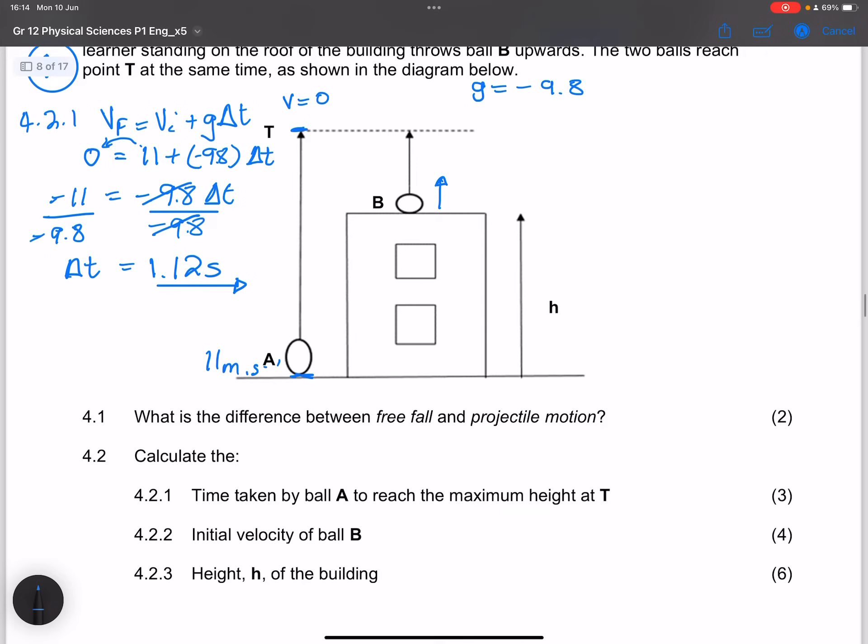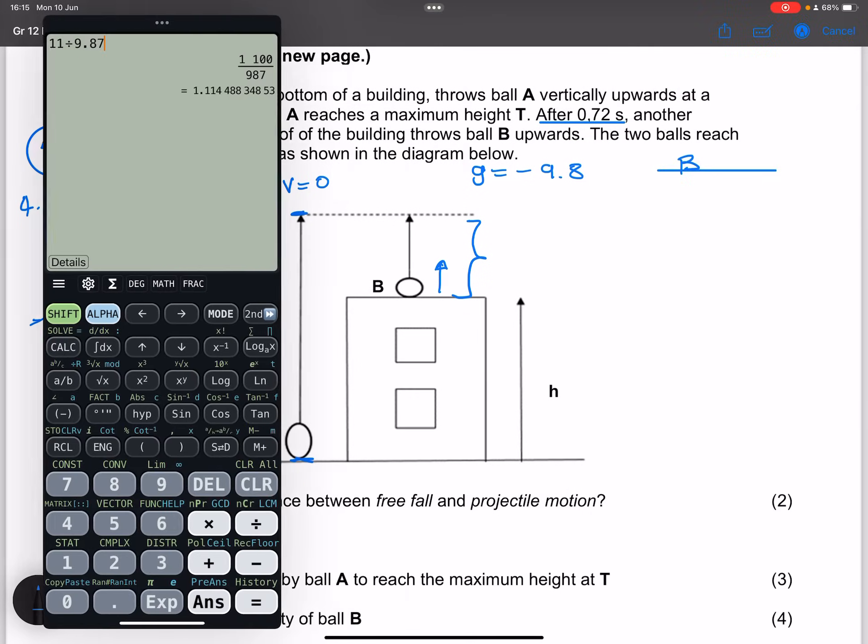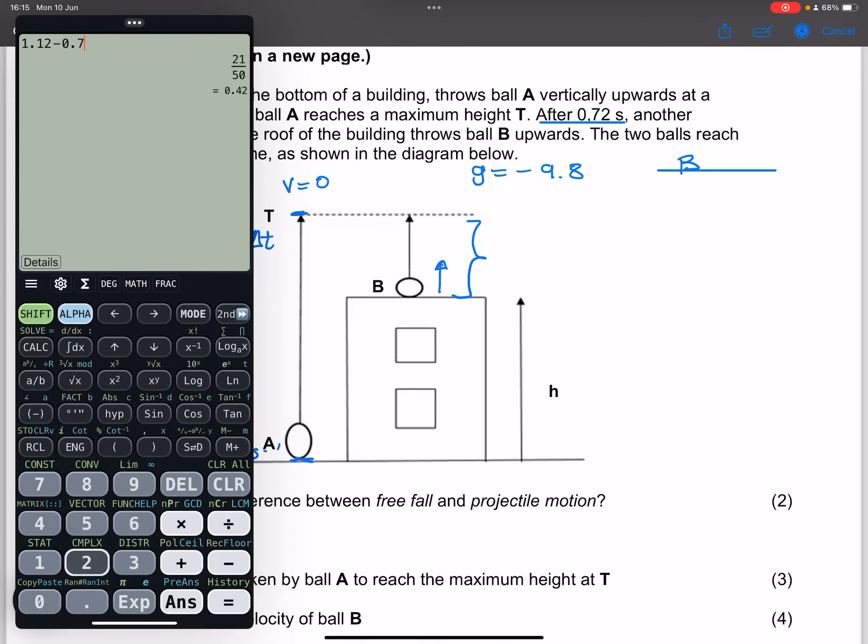Now let's go to the next question. They say calculate the initial velocity of ball B. Now I want you to note that ball B was thrown 0.72 seconds after ball A. That means that the total time of flight for ball B would be the time, remember they get to this point simultaneously. But in this case, what would have been the time that ball B spent in flight? So it would be the 1.12 seconds minus the 0.72. So that's 1.12 minus 0.72, which means that ball B was in flight for 0.4 seconds.